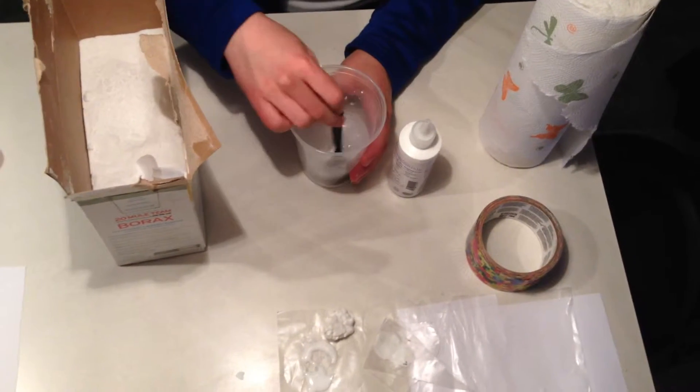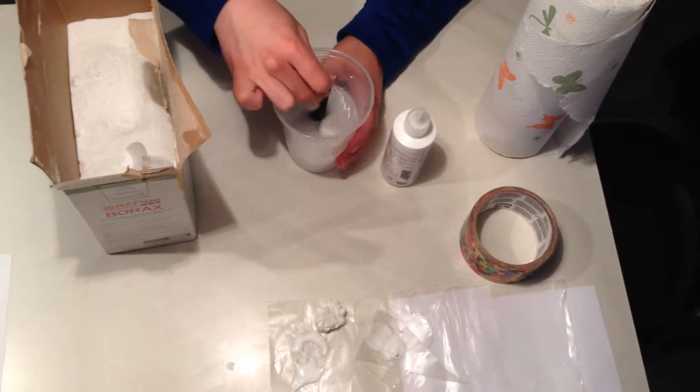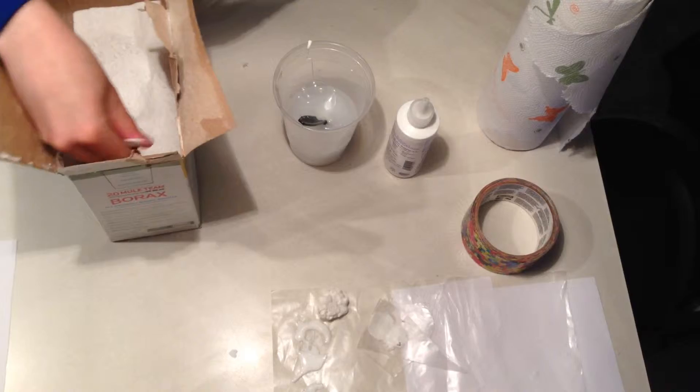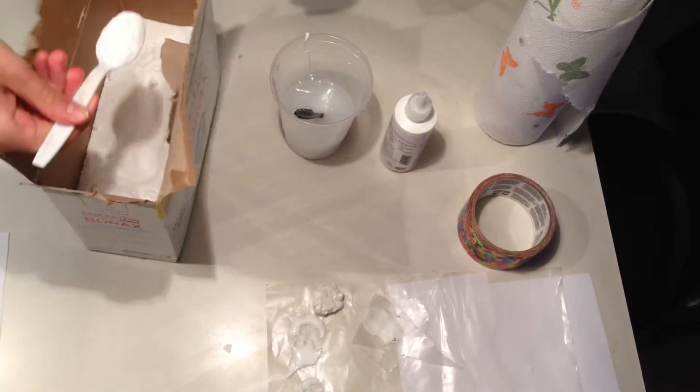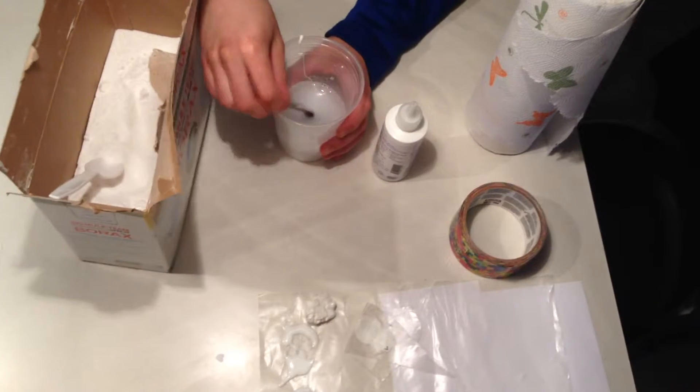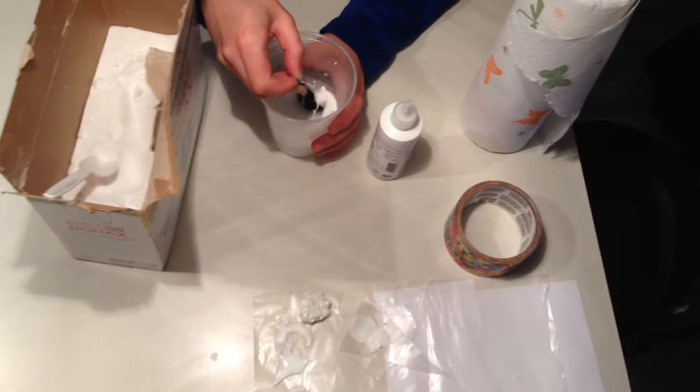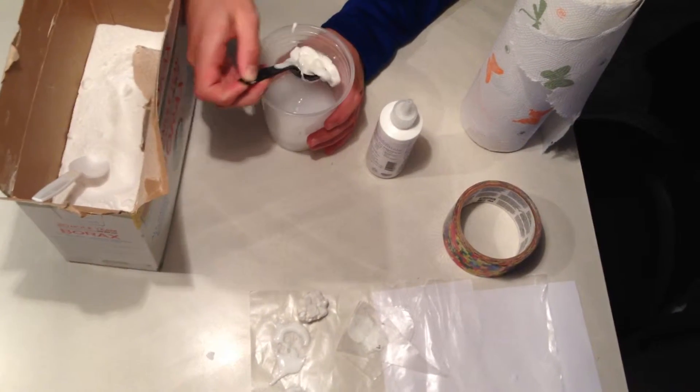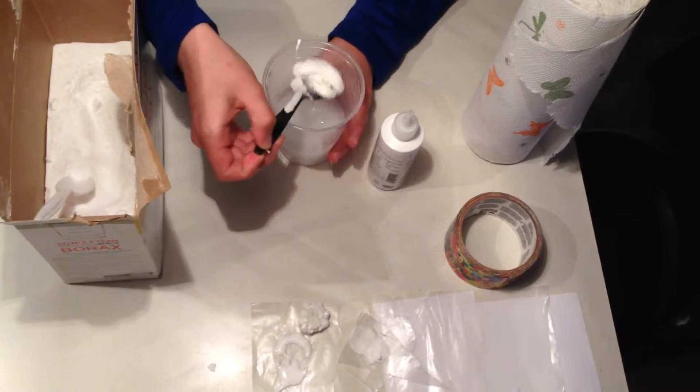Then you're going to mix around, and then you're going to add a spoonful of borax. And this is what's going to keep your Silly Putty together. So you're going to mix, and mix, and then you're going to start to get this glob.